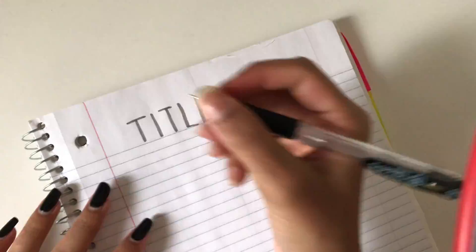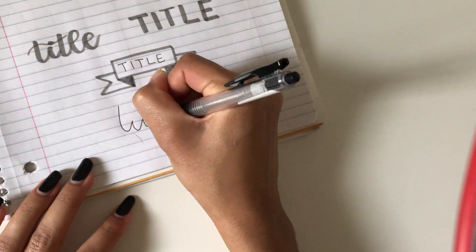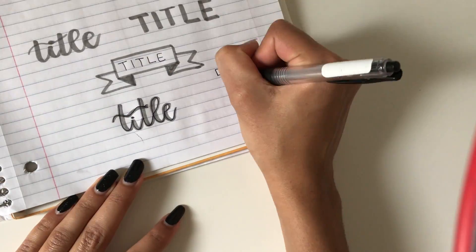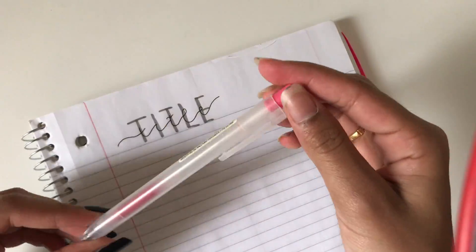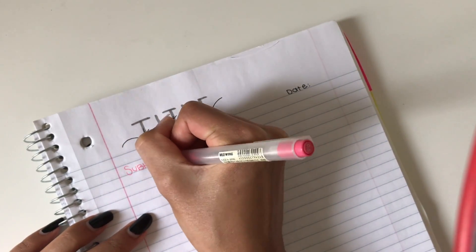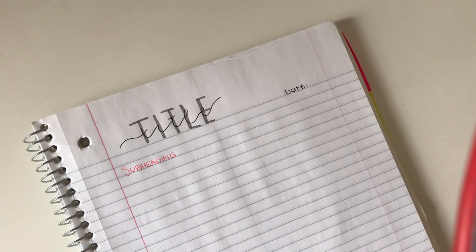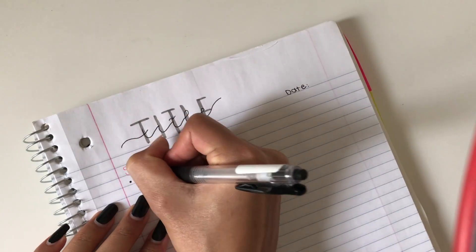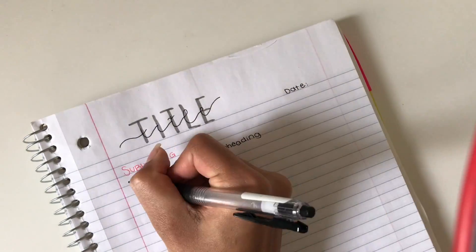Next you need to find a note-taking system that works for you. When I'm writing my notes, I first have a nice big title and I just decorate it as I can. Next I use a colored pen, here I use pink, to write my subtitle in all caps.